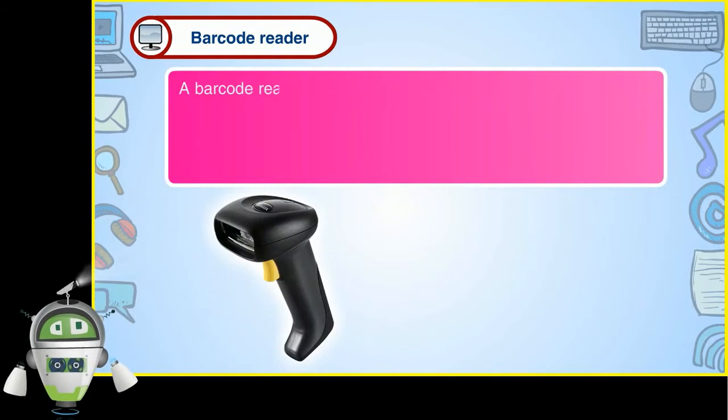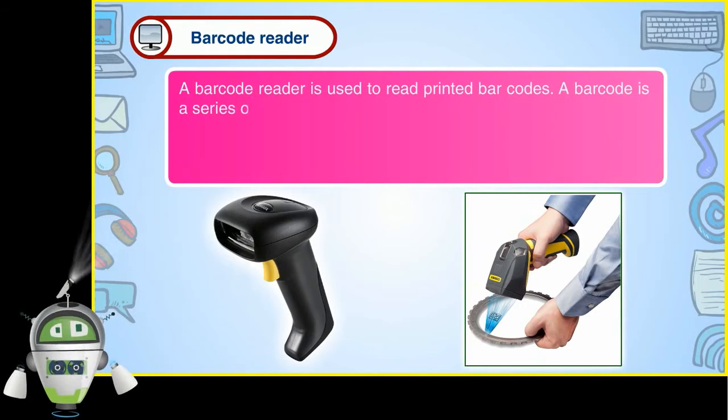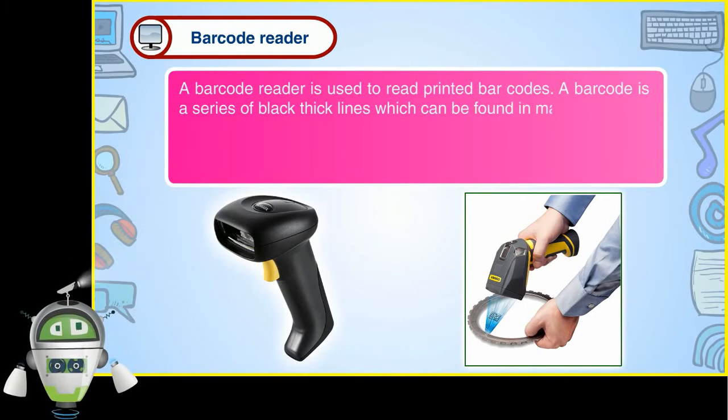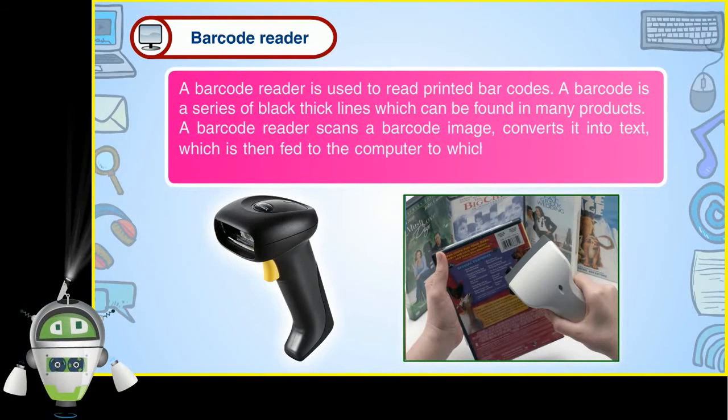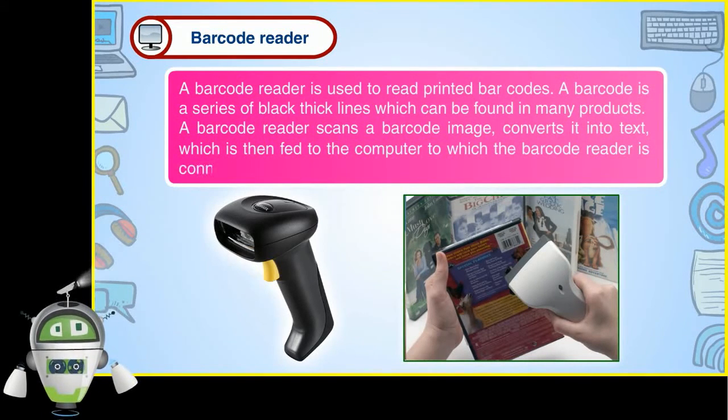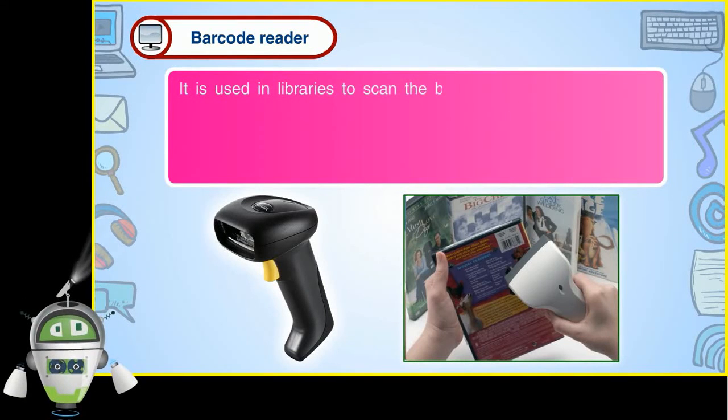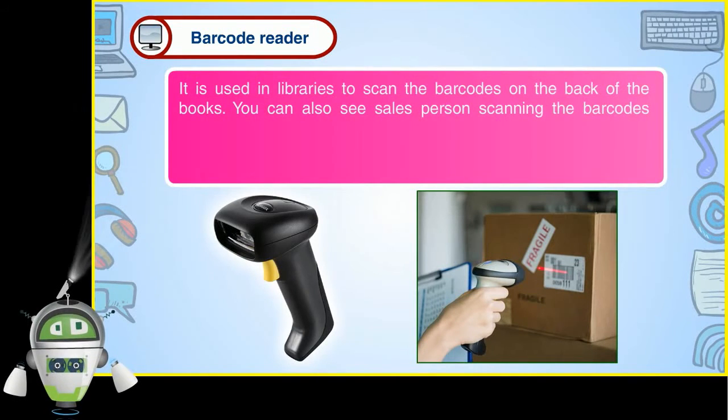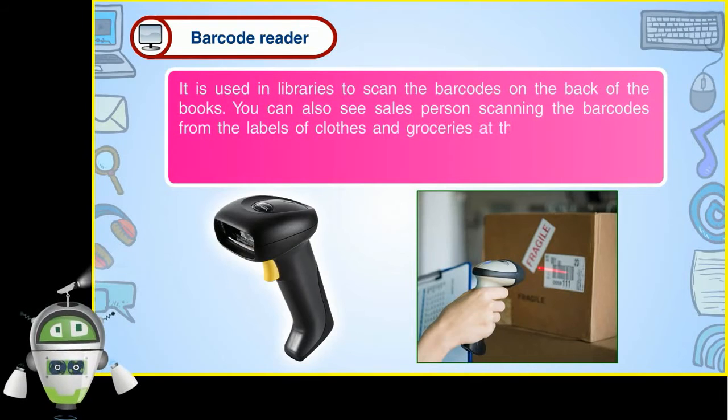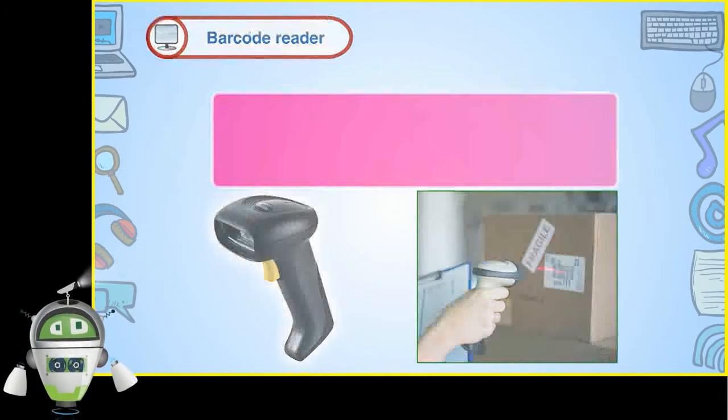Barcode reader: A barcode reader is used to read printed barcodes. A barcode is a series of black thick lines which can be found in many products. A barcode reader scans a barcode image, converts it into text, which is then fed to the computer, to which the barcode reader is connected. It is used in libraries to scan the barcodes on the back of the books. You can also see salesperson scanning the barcodes from the labels of clothes and groceries at the time of billing in shopping malls.